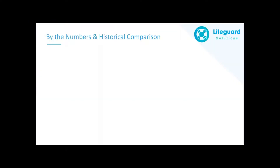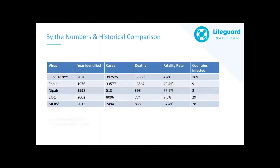Taking a look at by the numbers and a historical comparison, we can see exactly where we currently stand in recent history with diseases that have affected the global outlook. Most of these individual diseases have affected the global economy and have been essentially all over the world, with the exception of MERS, which is regionally based. Taking a look at the case and death rates, we are well above the established norm from any one of these other diseases, but if we look at the fatality rates specifically, we're well below that.